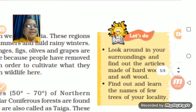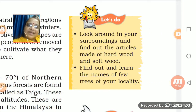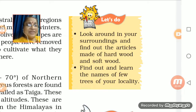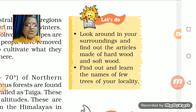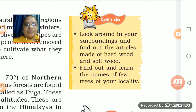Now find out the difference between hardwood and softwood. Some trees are softwood quality. From hardwood, furniture is made. From softwood, papers are made — remember, pulp and paper are made from softwood.